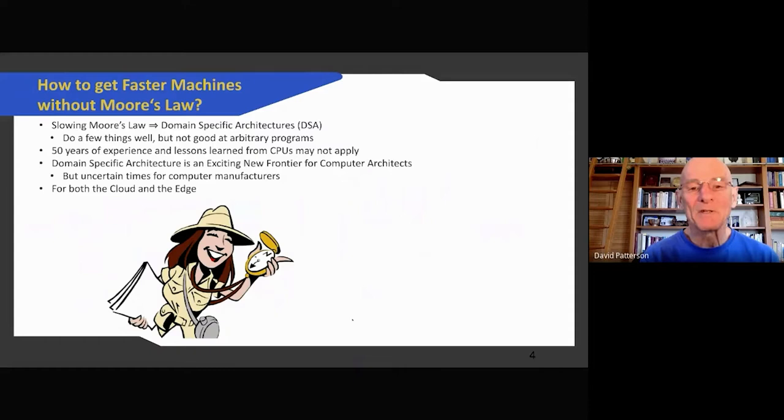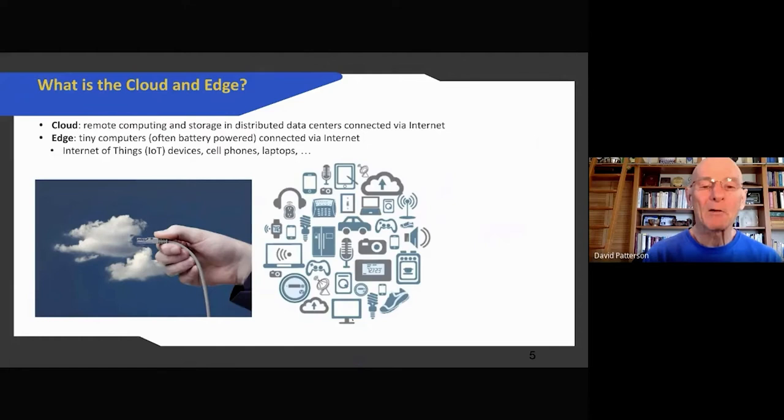We need these domain-specific architectures for both the cloud and the edge. The cloud is simply warehouse-scale computers with 50,000 servers in them at remote places. They also have storage in them and are distributed to data centers around the world that are connected via the internet. That is the cloud. And the edge is the tiny computers that are often battery-powered: internet of things, cell phones, laptops, cars, tennis shoes, everywhere. Let's do them in sequence starting with the cloud.